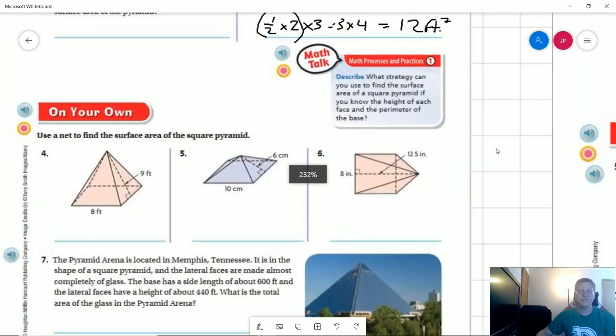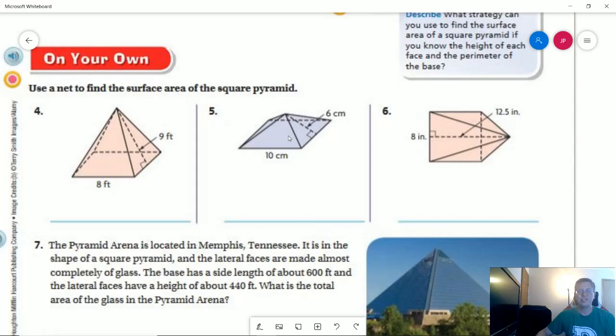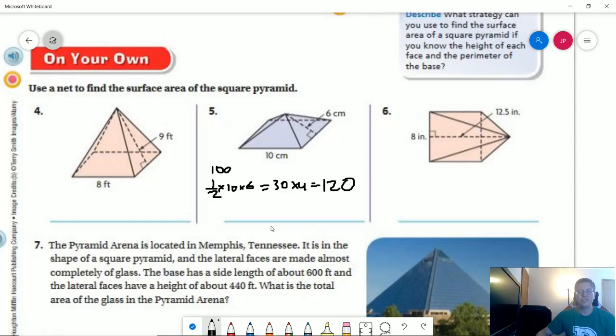Number five. So working with the surface area, we've got 10 by 6. So 10 times 10 is going to give us 100 for the base. And then we have four sides that are going to be one half of 10 by 6. So that's going to be 5 times 6, which would give us 30. We're going to have four of those. And that would give us 120 for that part. Plus the 100 that we have will give us 220 centimeters squared.